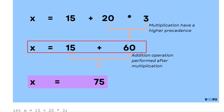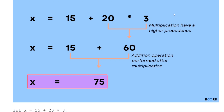Now the expression becomes x = 15 + 60. The addition operation gives 15 + 60 = 75, and 75 is assigned to the variable x. This order of execution is based on precedence.